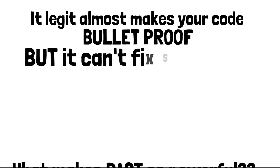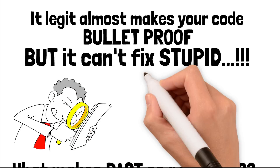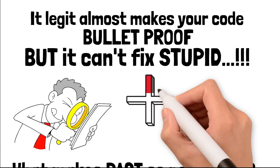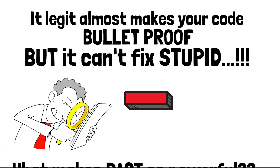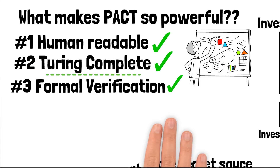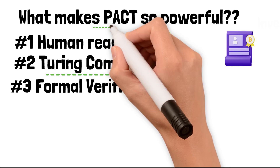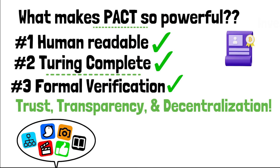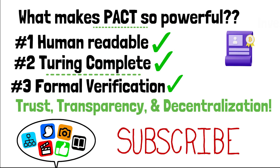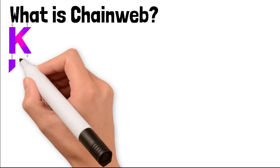Because the coding language is Turing complete, the code needs to be complete — meaning there can't be any backdoor loopholes for hackers to exploit. It makes your code almost bulletproof, though it can't fix human error like putting a plus sign where a minus sign should be. That's what audits and hackathons are for. Audits plus Pact make blockchain safe again.